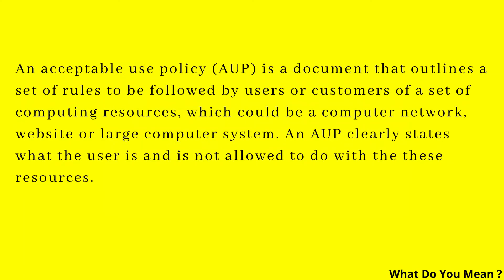An Acceptable Use Policy is a document that outlines a set of rules to be followed by users or customers of a set of computing resources, which could be a computer network, website, or a large computer system. An AUP clearly states what the user is and is not allowed to do with these resources.